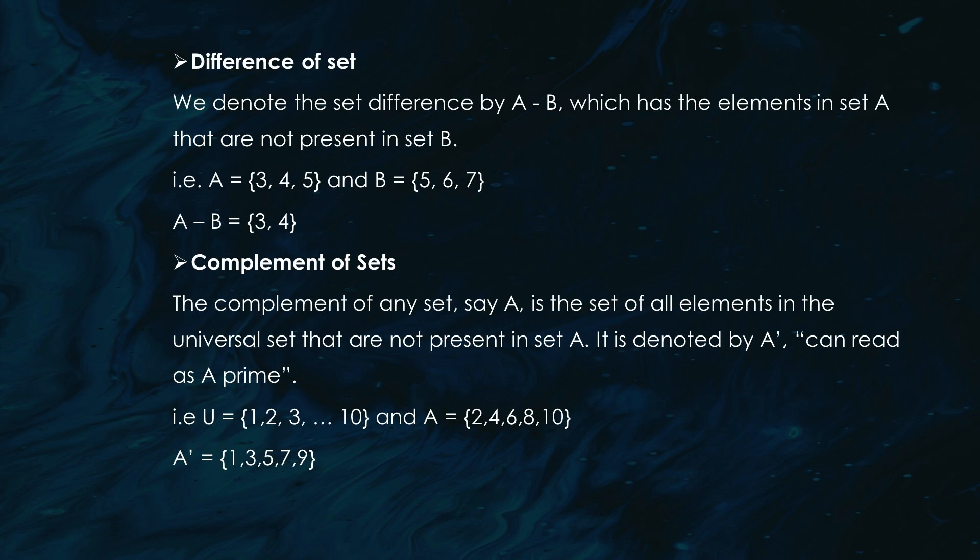(3) Difference: A − B. This operation shows what's left in set A when you remove the elements of set B. If set A = {3, 4, 5} and set B = {5, 6, 7}, then the difference of A and B = {3, 4}.